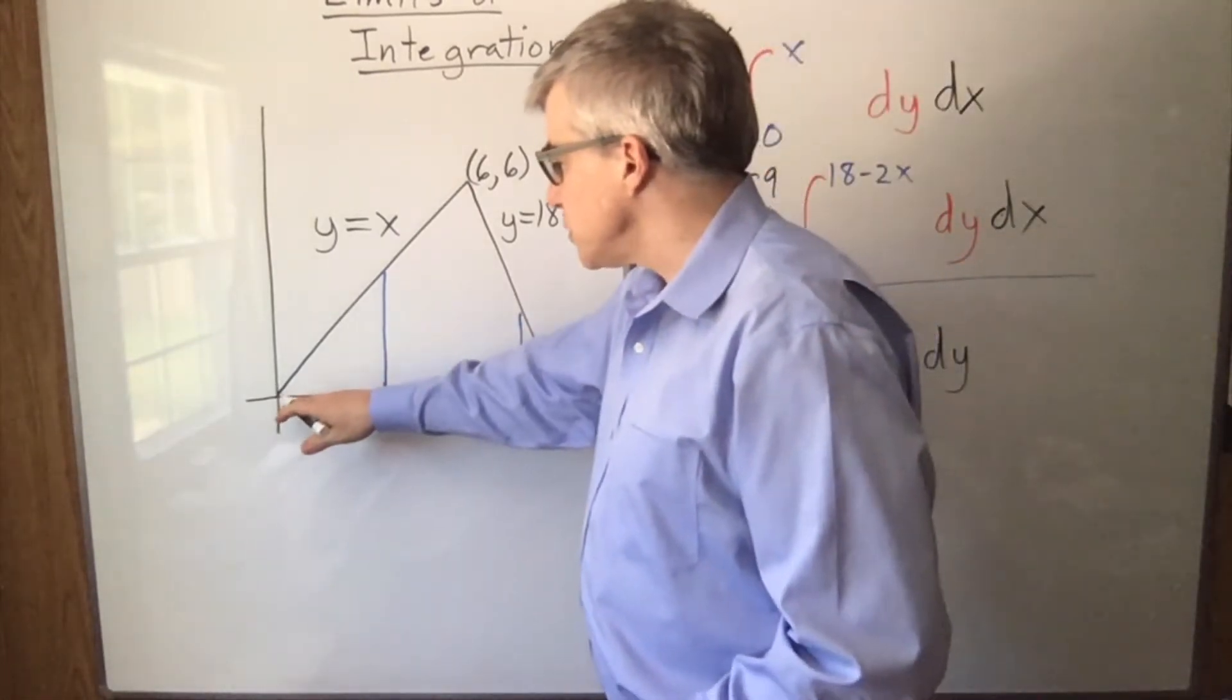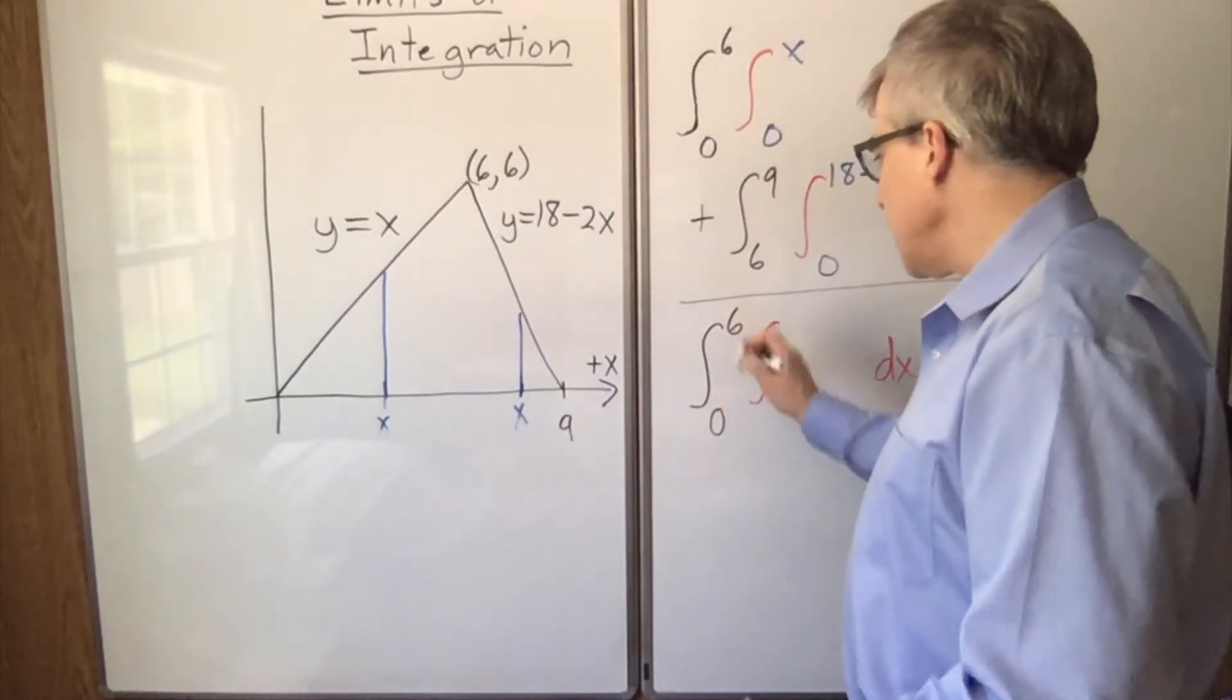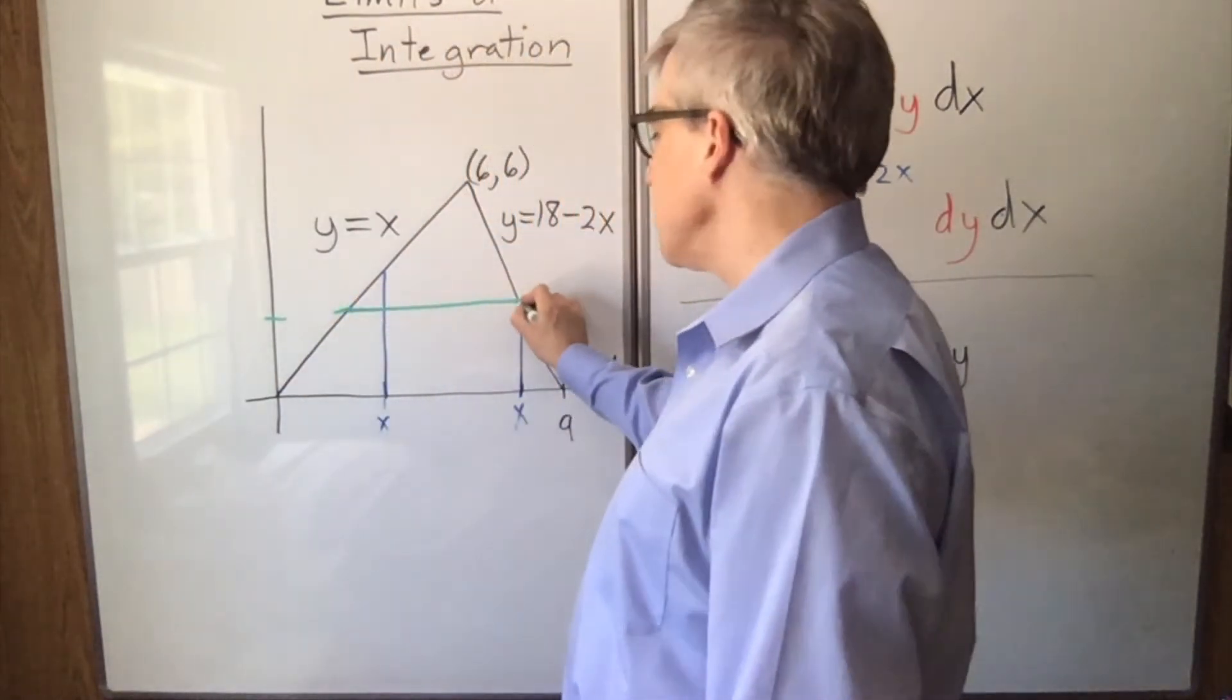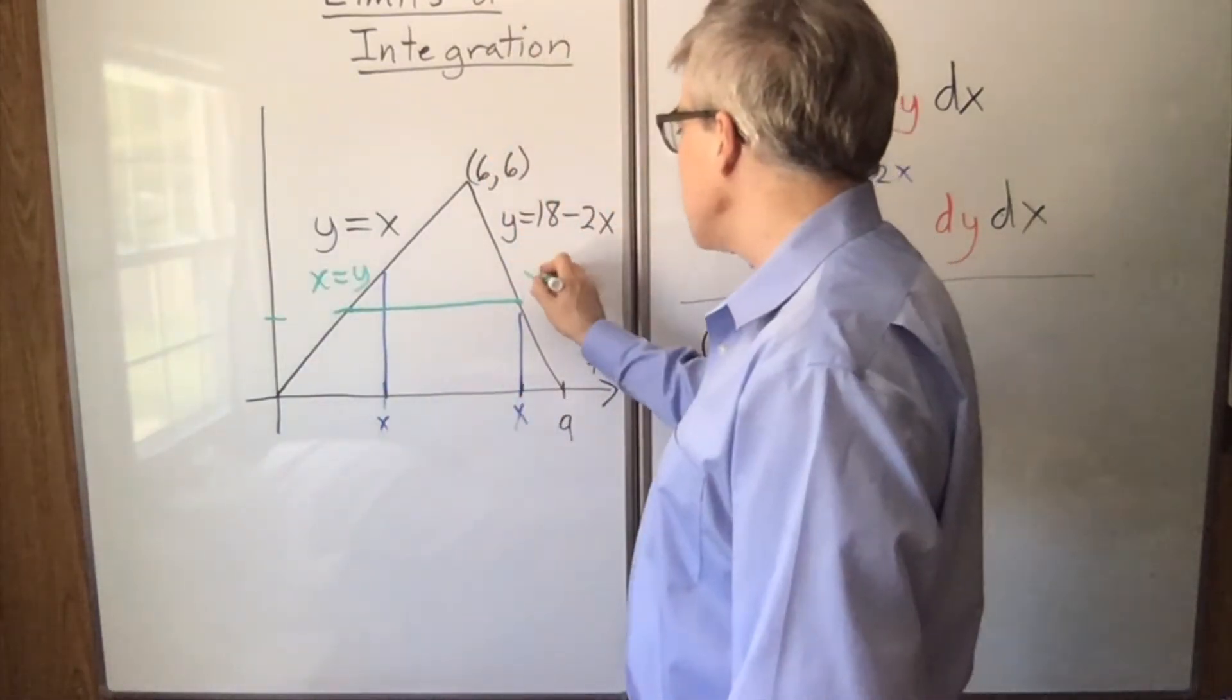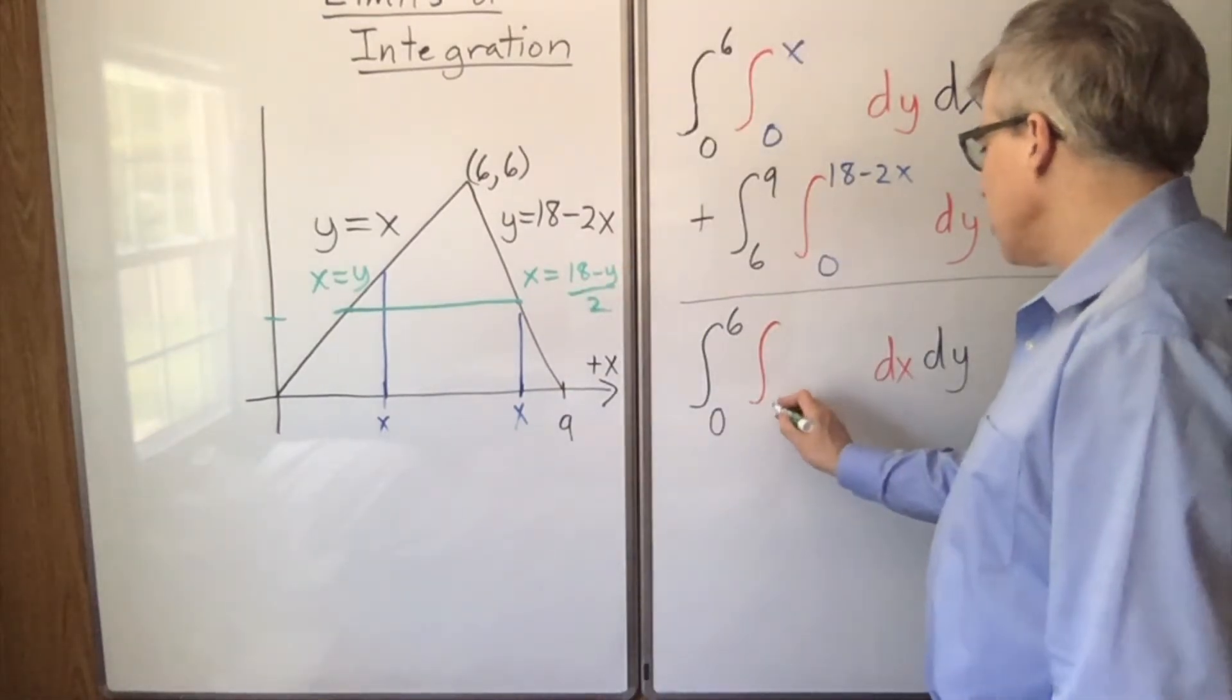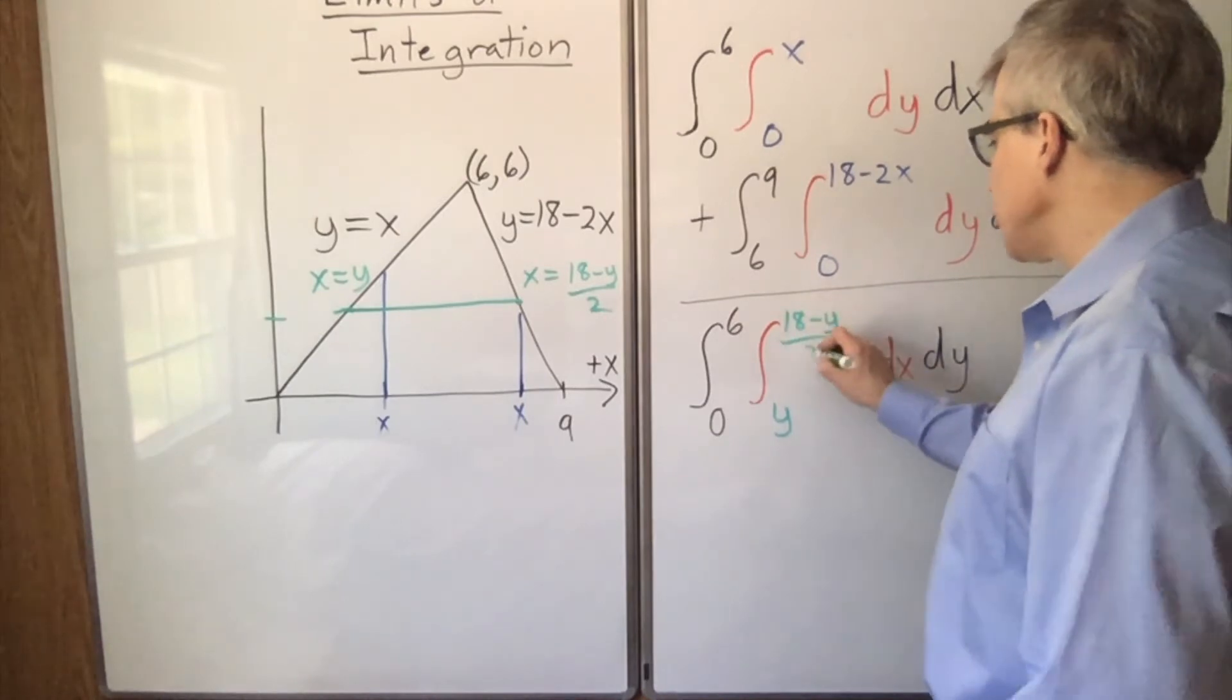So the y limits are 0 to 6, because that's the full range of values for y. And then for a random value of y, x ranges from here to here. Here x equals y, and here x equals 18 minus y over 2. So the limits here are y to 18 minus y over 2.